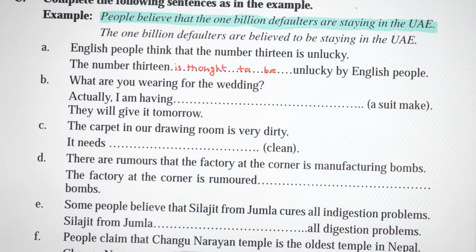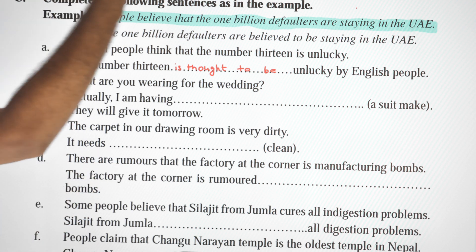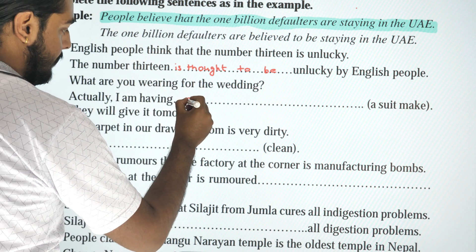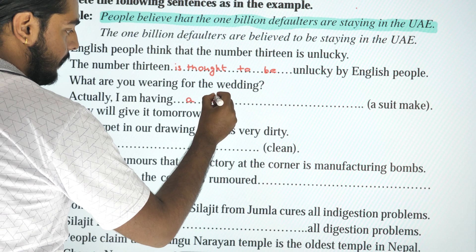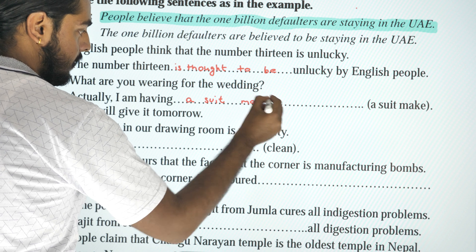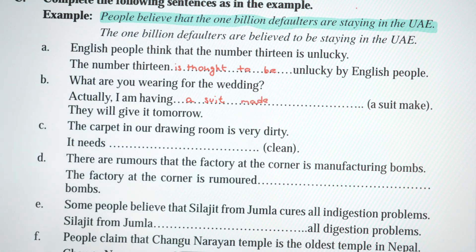Next dialogue: 'What are you wearing for the wedding?' Reply: 'I am having a suit made.' This uses the 'have something done' causative passive structure — verb three: 'made.'